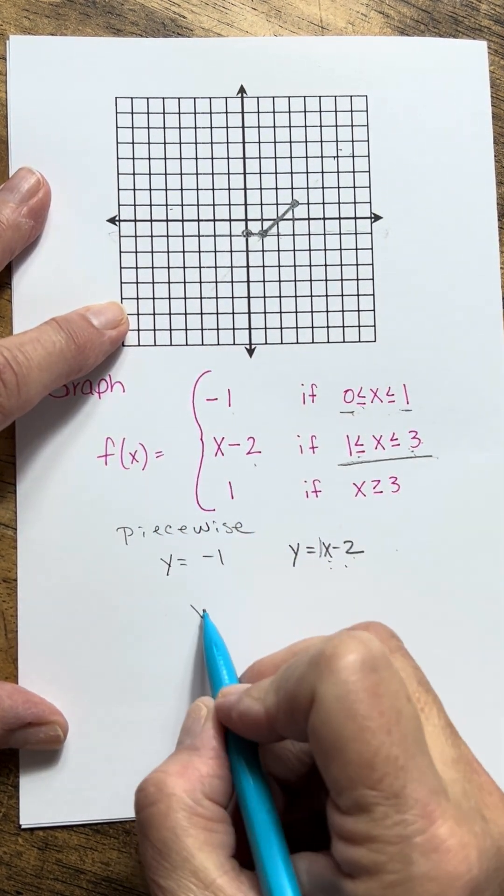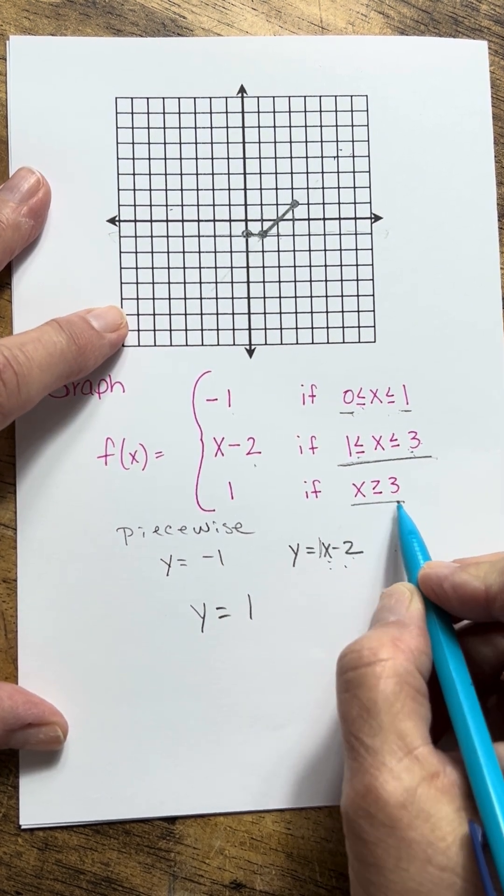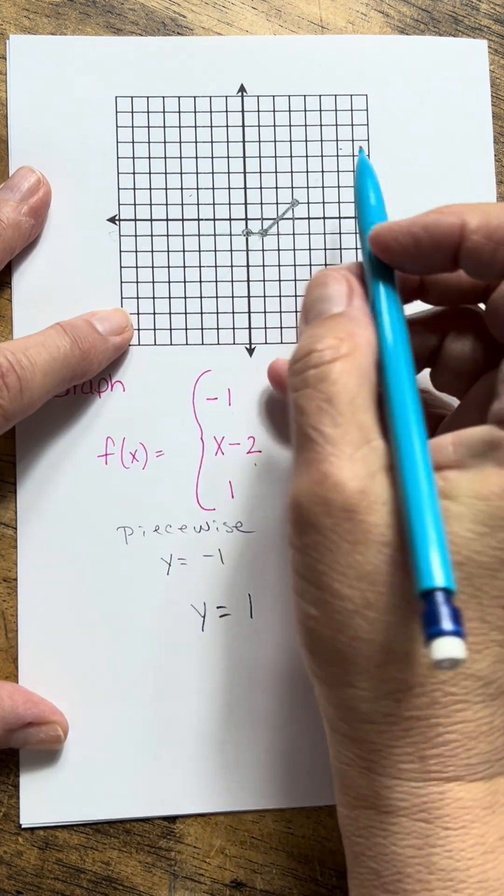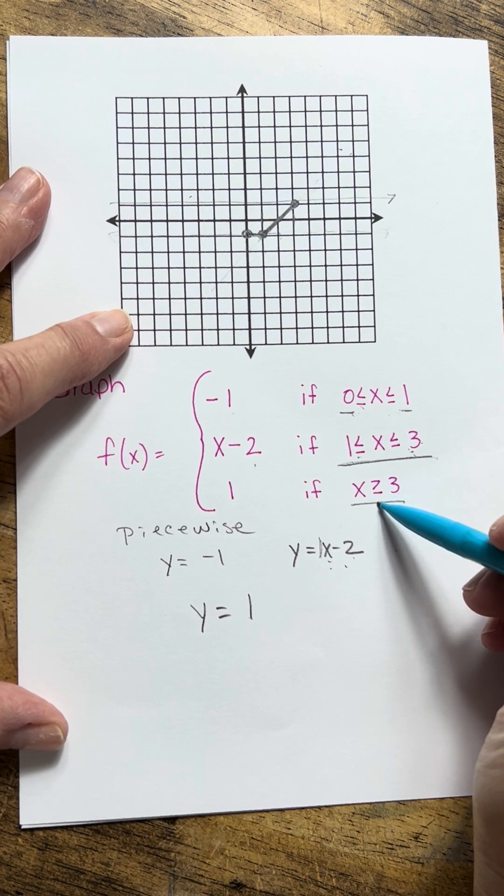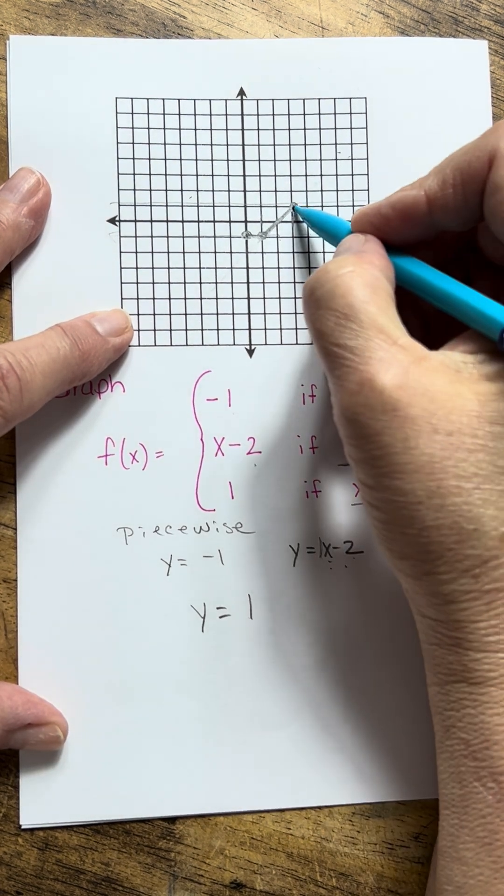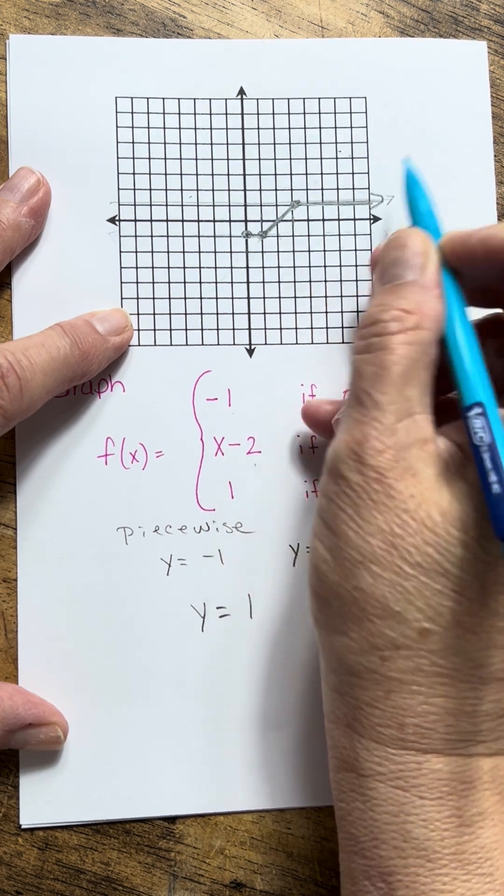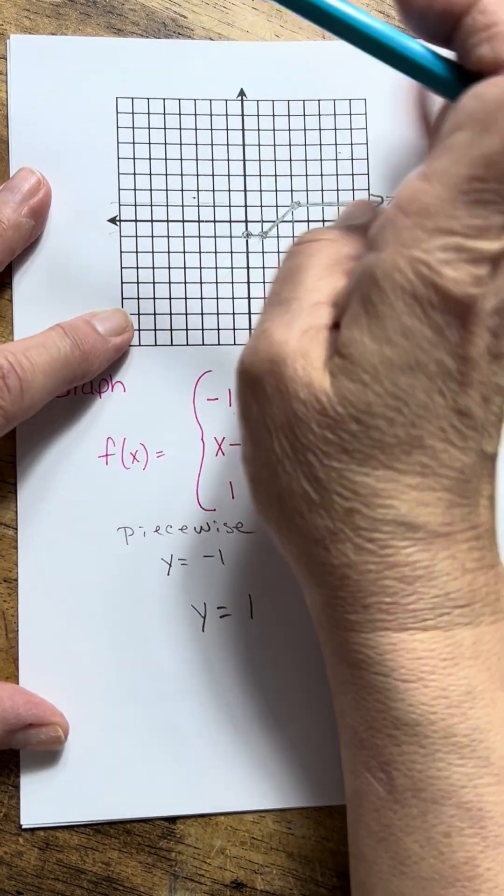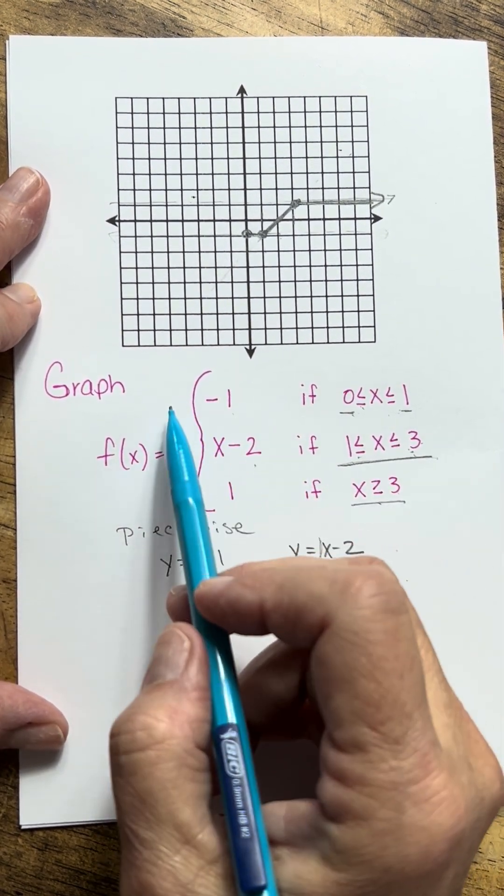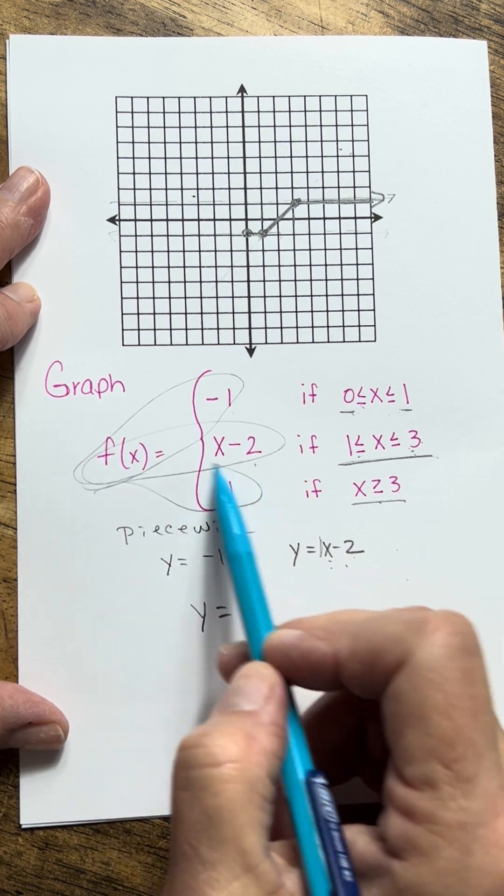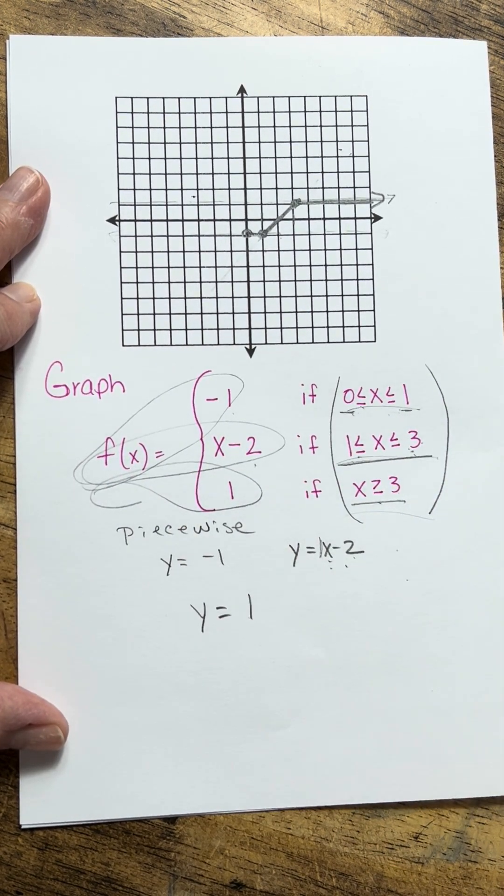Then the last part, y is equal to positive 1 for x is greater than or equal to 3. Well, y equals 1 is going to be a horizontal line right here at positive 1. And if I start at 3, which is right here, greater than or equal to 3, and since it's going to continue on, I'm just going to erase the part that would be on that side. And that's all it is to piecewise functions. You're graphing however many separate functions, but you only keep the parts of them that fit your restrictions.